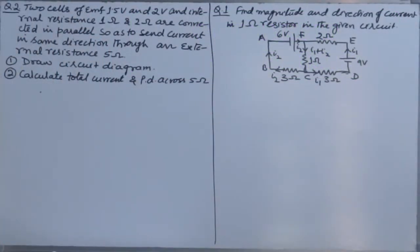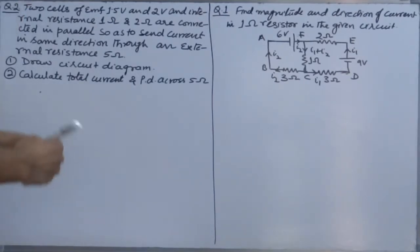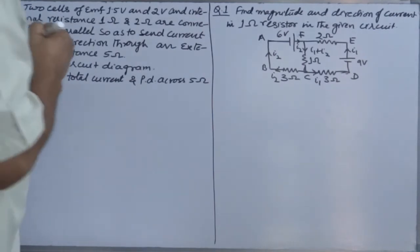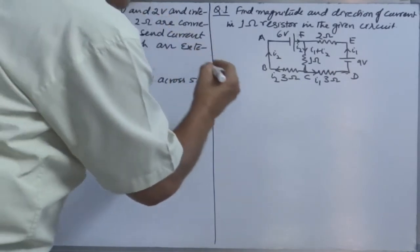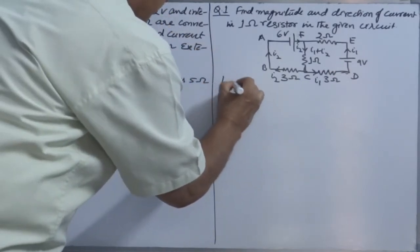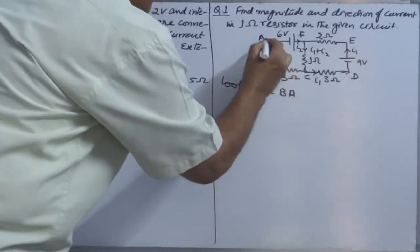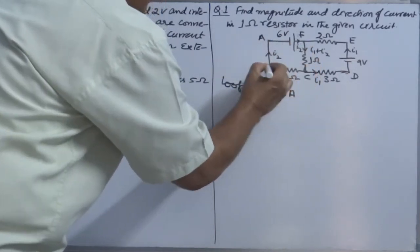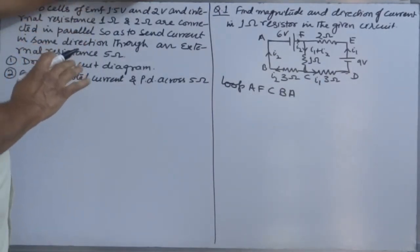Let's do some questions based on Kirchhoff's laws. The first question is: find the magnitude and direction of current in a 1 ohm resistor in the given circuit. It's a well-labeled circuit and currents are also marked. We can choose a loop — say loop AFCBA.